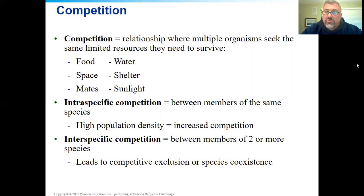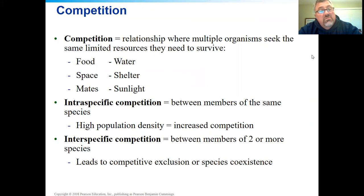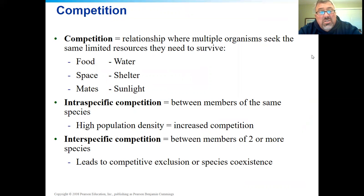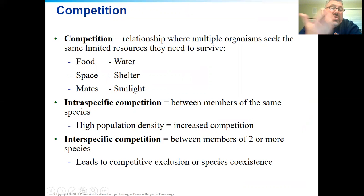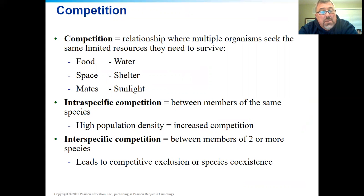Let's talk about competition first. A limiting resource — what are some examples? Food, water, shelter, sunlight, mates, space, territory. These are things organisms need to survive. If they don't have these things, it will decrease their reproductive success and maybe cause an organism to die. These are very important things.